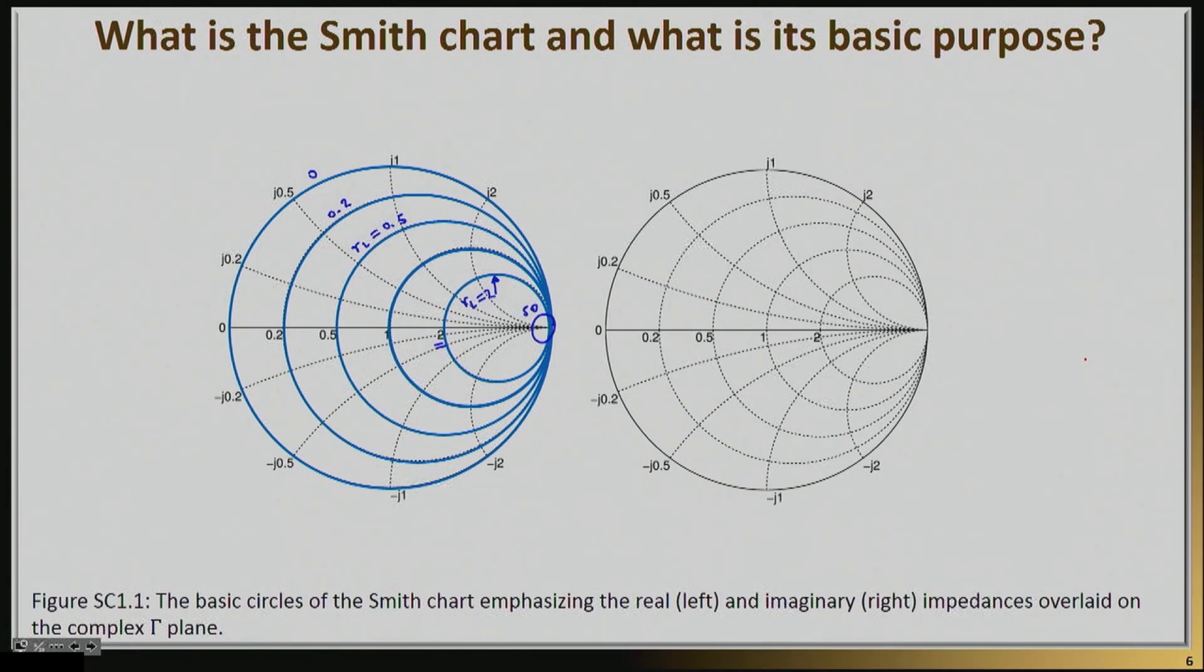Now similarly, I have plotted, and I have rather emphasized, the imaginary part on the right hand side. Now the imaginary part XL, for example, for this part of the circle, has a value of 2. The imaginary part of this part of the circle has a value of 1, and so on and so forth.